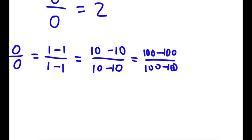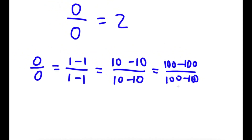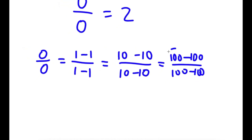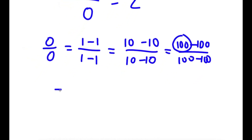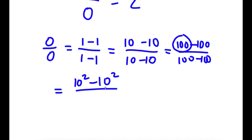Now I'm going to simplify 100 minus 100 over 100 minus 100. 100 is the same thing as 10 squared, so this is 10 squared minus 10 squared for our numerator. For my denominator, 10 squared is the same thing as 10 times 10, so I'm going to write 10 times 10 minus 10 times 10. This is still 0 over 0.